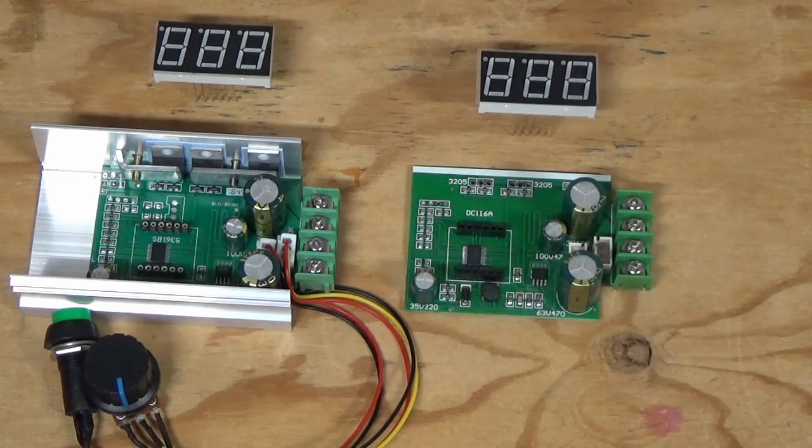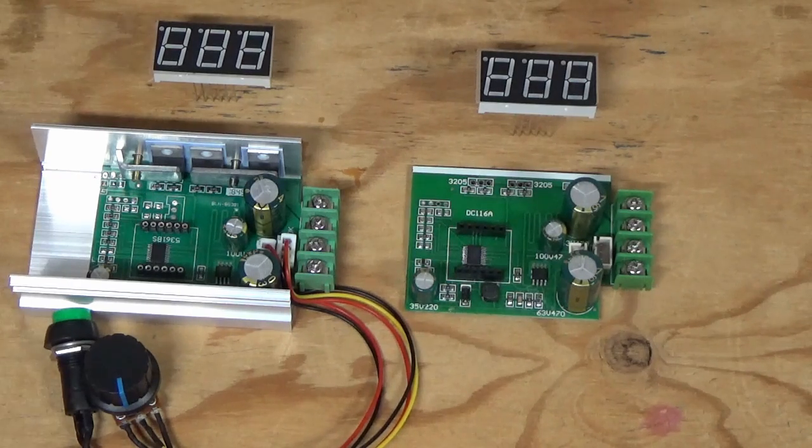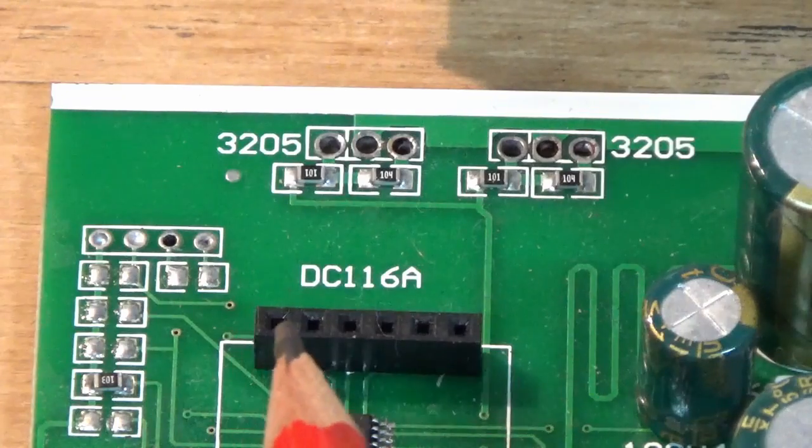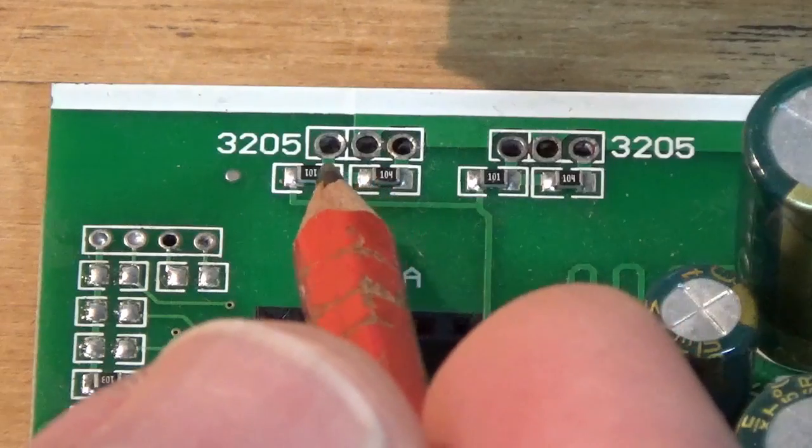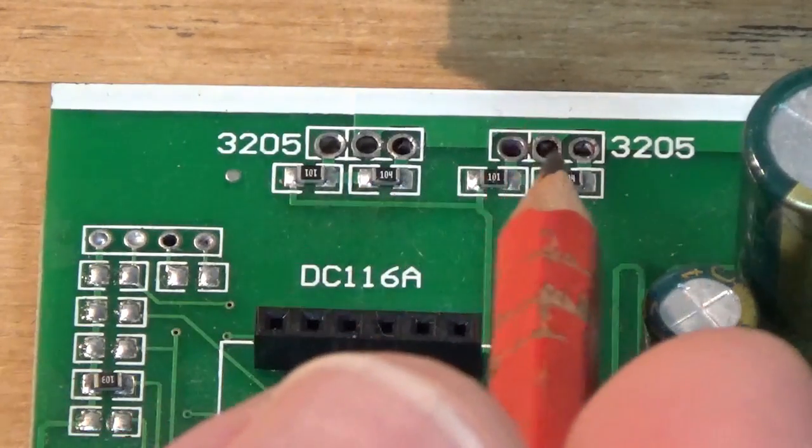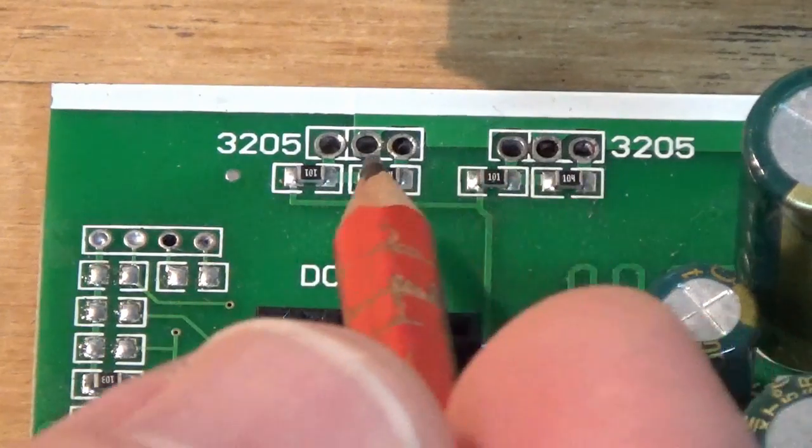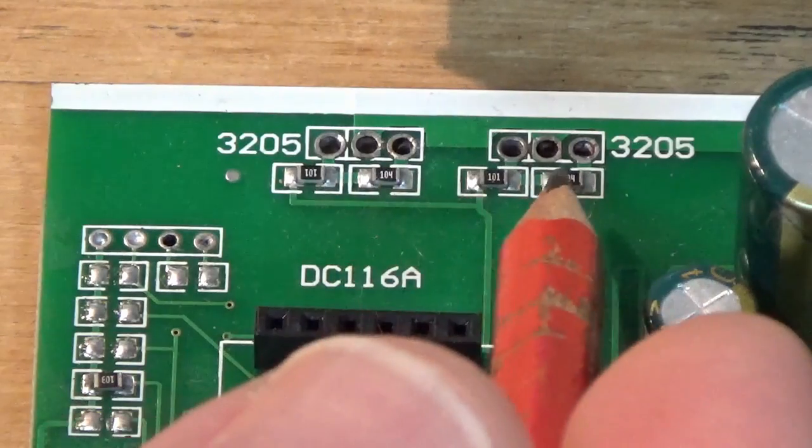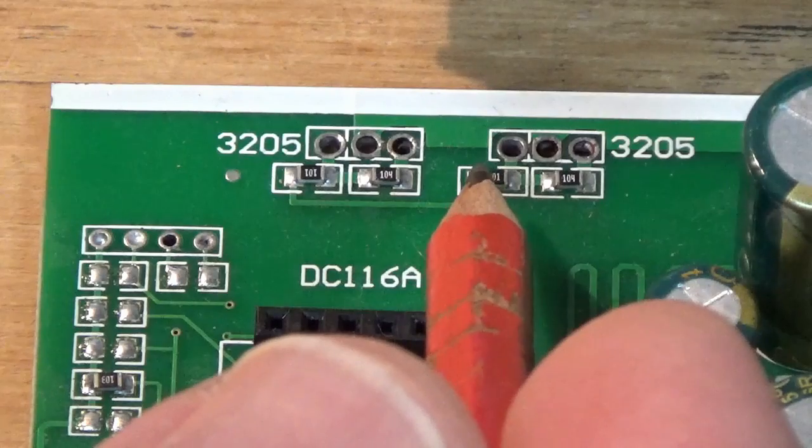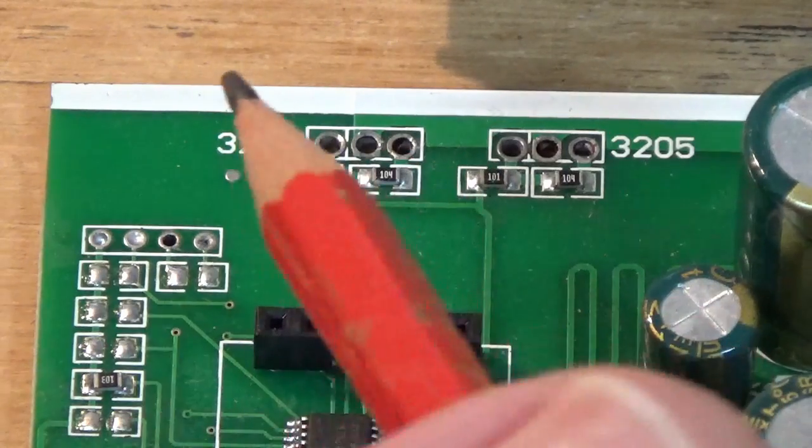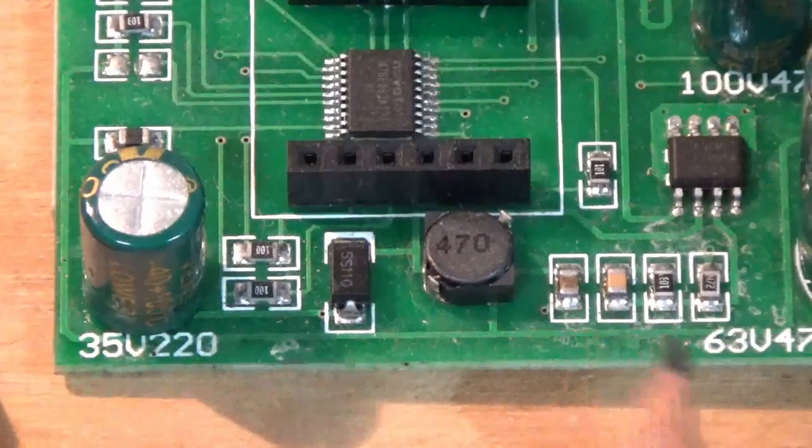But then I started looking at the components. As we were looking through the board, we started noticing that there were differences in the component values. These surface mount resistors here were correct, but these two weren't. These were 1k, and the working board was only 10 ohms.